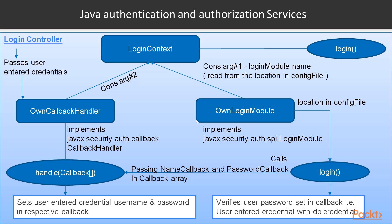That's how authentication in JAAS works. For authorization, once the principal is authenticated and you know which user it is, you define roles in the configuration file as principals. You don't need to go into more detail about JAAS itself here, since the focus is on how to use JAAS with Spring Security. To authorize requests, you provide the role separately in the config file after authentication via the login method.